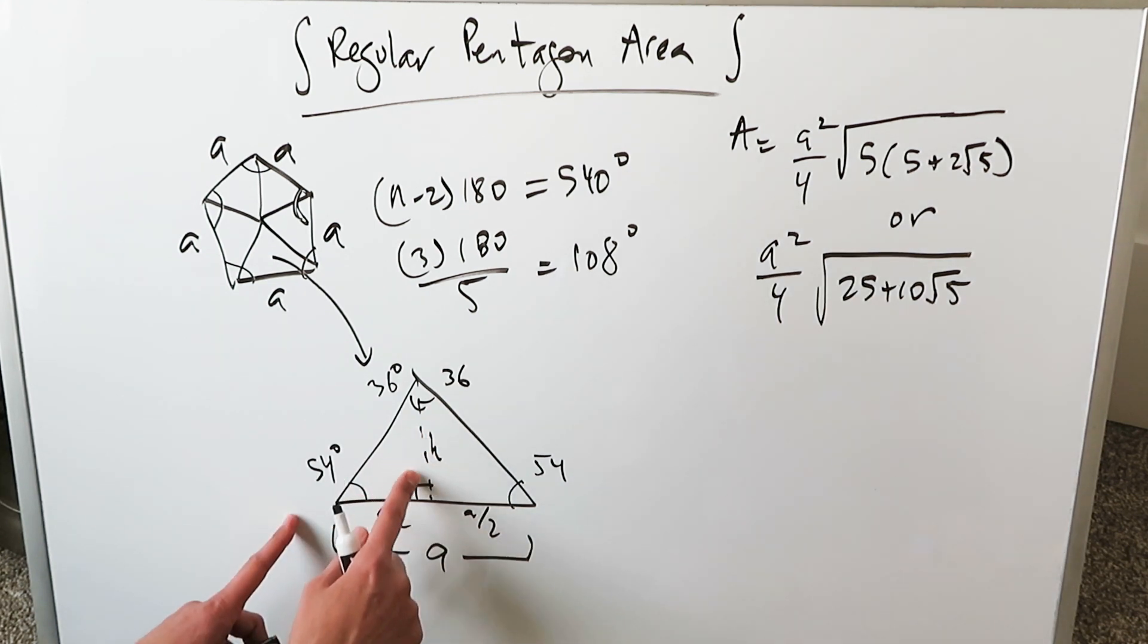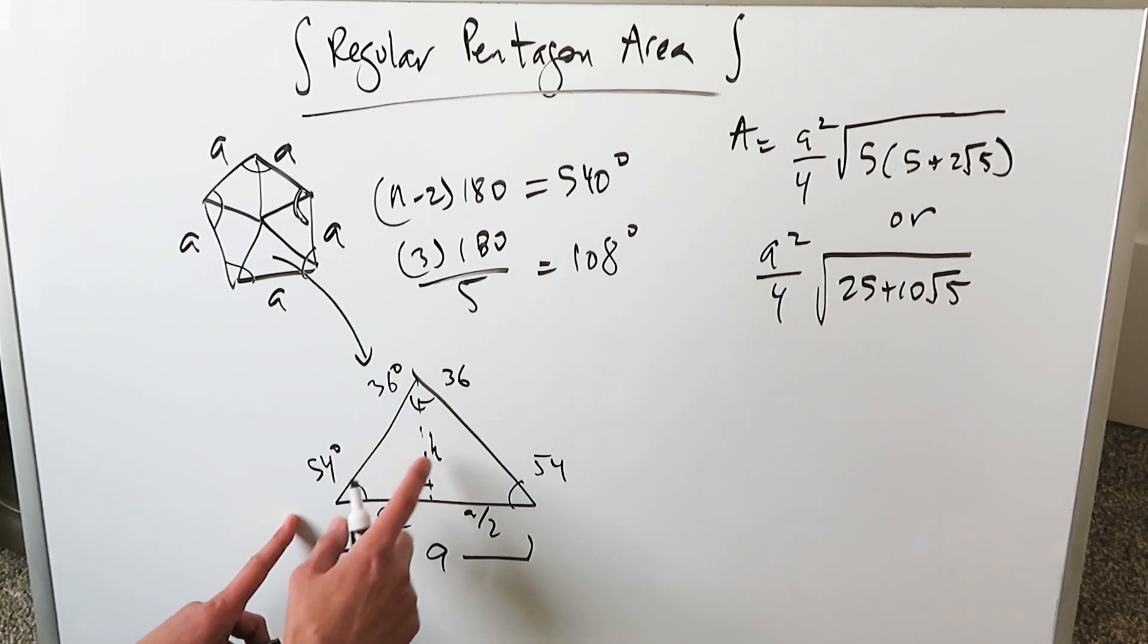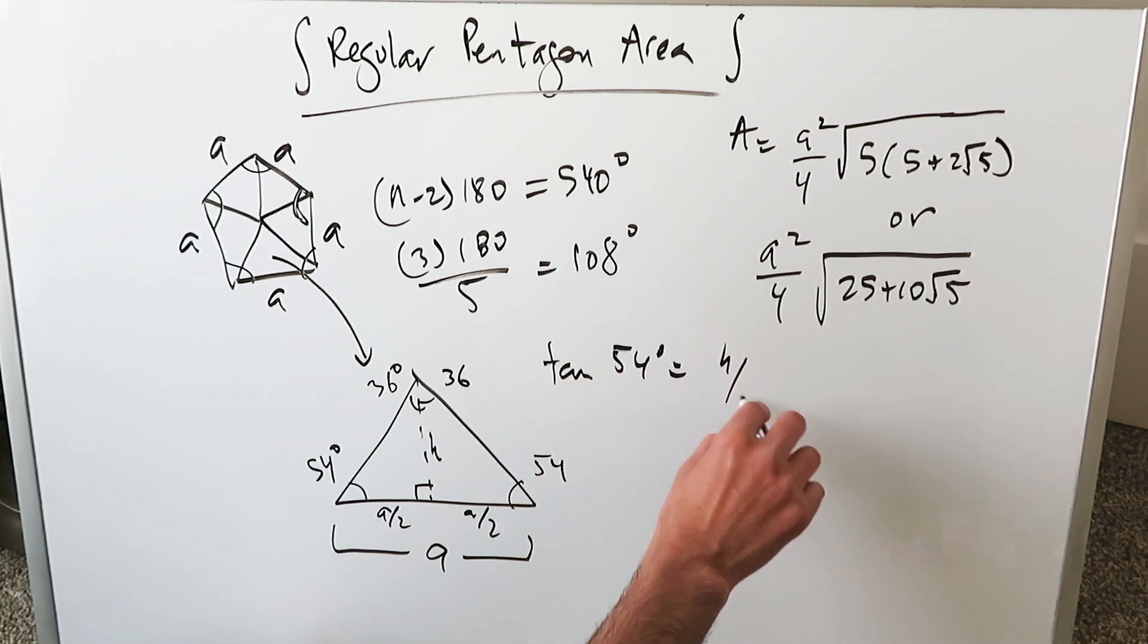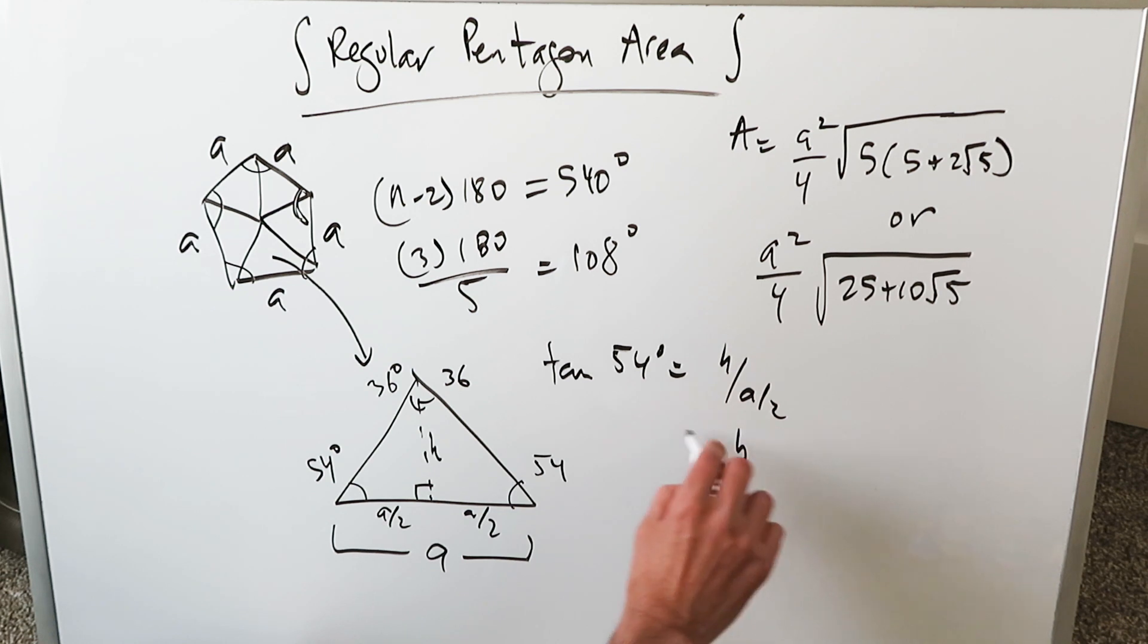I have to determine the height of this triangle. I have a base. How can we do it? Tan 54 degrees is equal to H over A over 2. H is equal to A over 2 times tan 54.